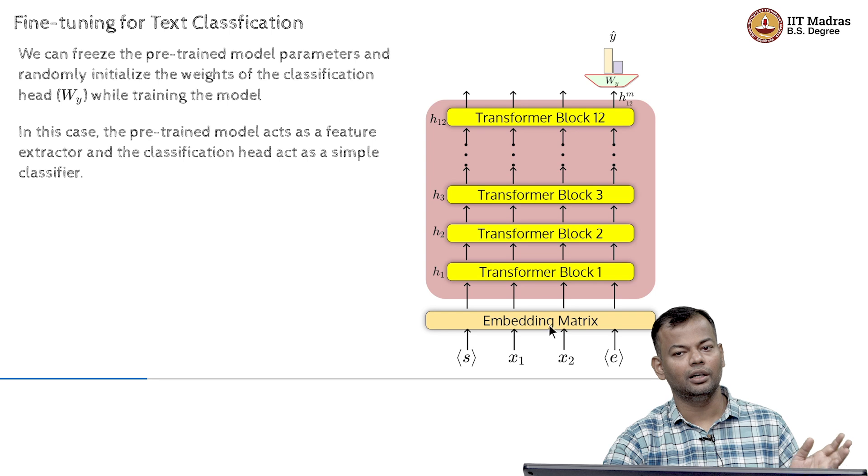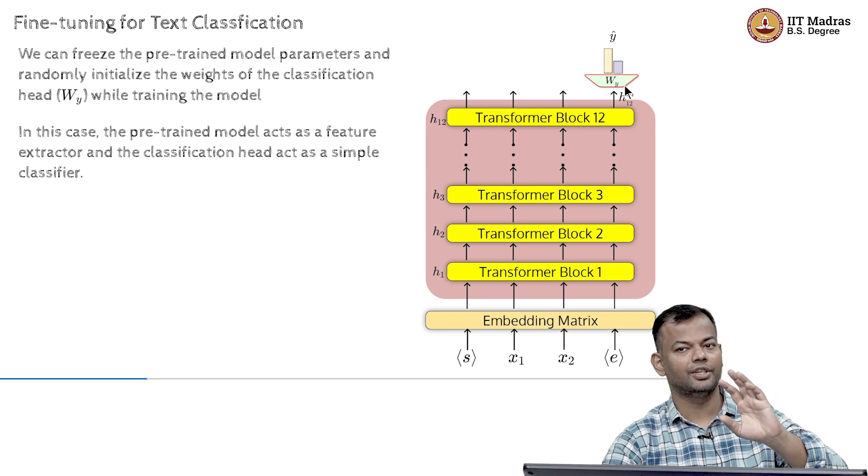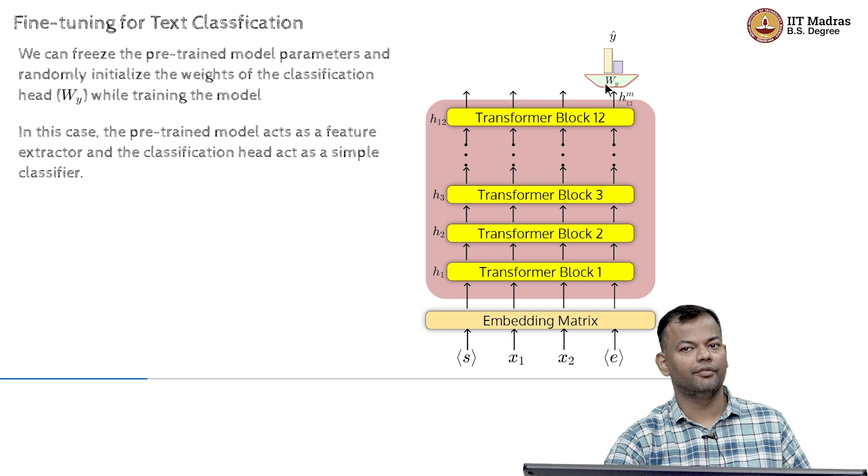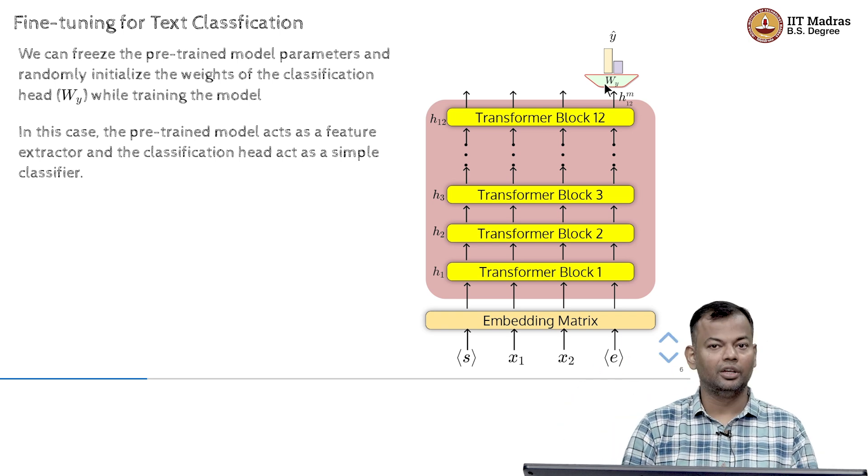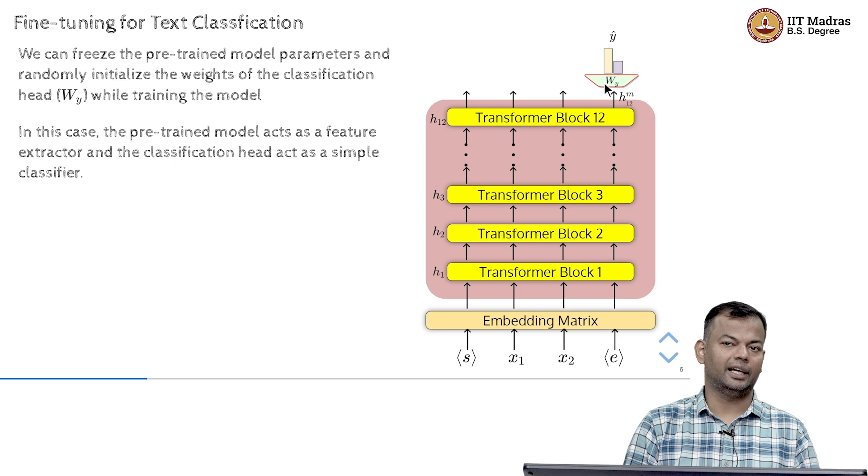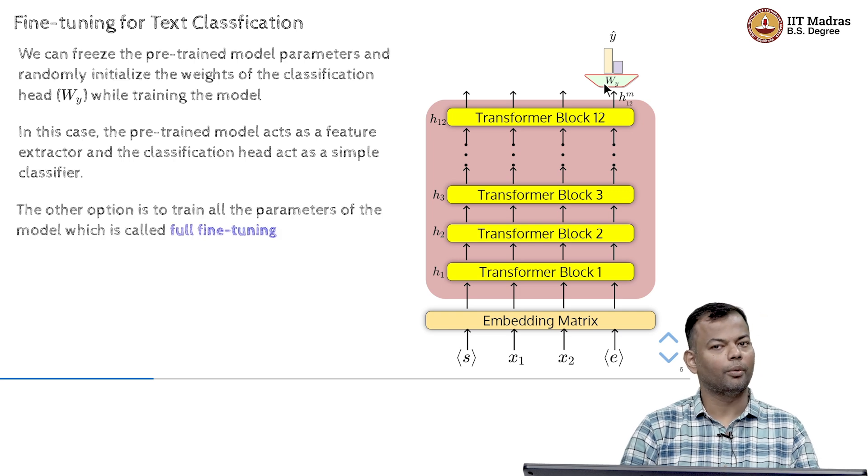You could think of this as offline also. You can just take your entire training data, pass it through this network, get the feature vector and then just sort of operate on this layer where you are just doing a back propagation on WY. So, that's why it acts as a feature extractor if you are freezing the entire network and that's more common to do.